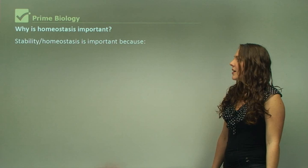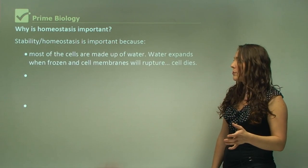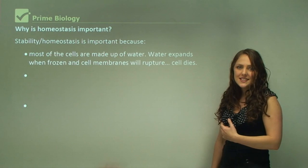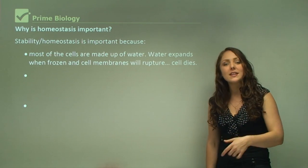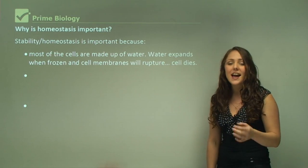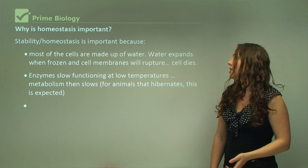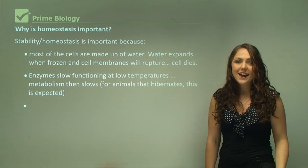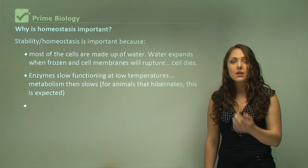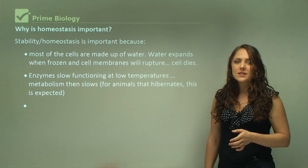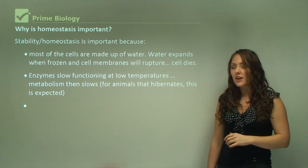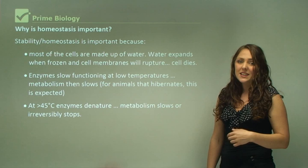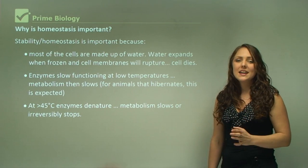Why is homeostasis important? Stability is important because most cells are made up of water. Water expands when frozen and cell membranes will rupture, leading to cell death. Enzymes slow functioning at low temperatures, which slows metabolism. For hibernating animals, this is expected. At more than 45 degrees, enzymes denature and metabolism can stop — so it's very important to maintain homeostasis.